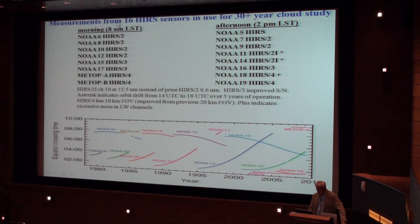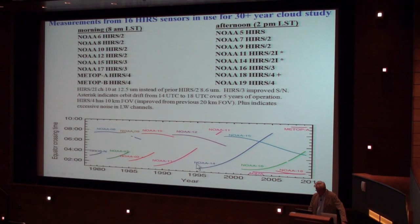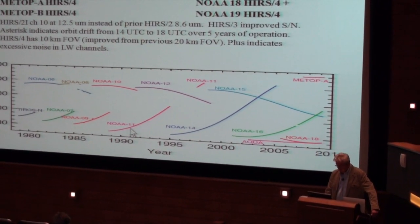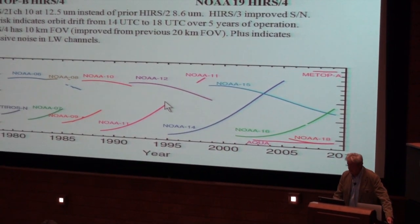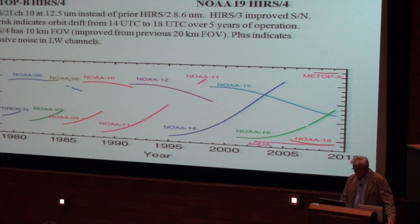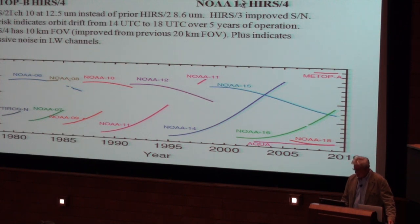We have HIRS in the morning and afternoon, so you can do diurnal studies. We have equator crossings showing these orbits weren't very well maintained — there's orbit drift, where your morning satellite becomes an afternoon satellite. If you have a diurnal signal in clouds and you're trying to do a 30-year cloud climatology, the time of day is going to be important. Some of these sensors also changed: HIRS-2 went to HIRS-2I with spectral channel changes, HIRS-3 came in, and HIRS-4 changed the field-of-view size. These aren't identical instruments, but they're close enough that we're going to try to accommodate differences.